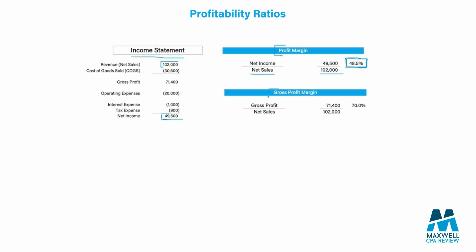Then we have the gross profit margin, which only focuses on the top portion of the income statement. Gross profit is your revenue minus your cost of goods sold, which is $71,400. It shows how much we're profiting before looking at all other expenses. With $102,000 of revenue turning into $71,400 of gross profit, for every $1 we sell, we keep $0.70 as gross profit — meaning our cost of goods sold is 30% of our revenue. These ratios help us break apart our income statement to see where and how profitably we're spending.